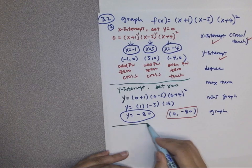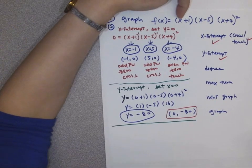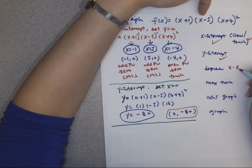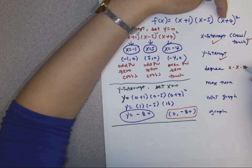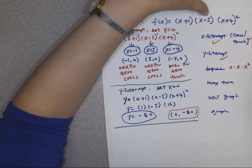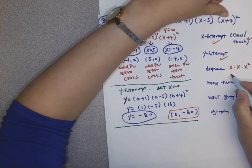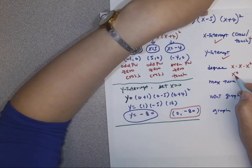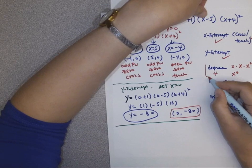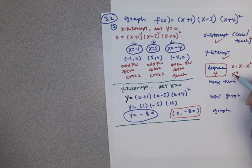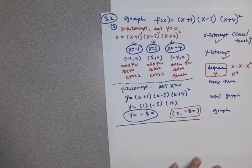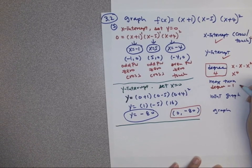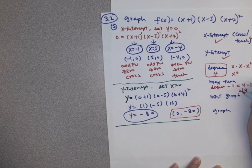What degree is it? There's an x to the first from the first factor, x to the first from the second factor, and x to the second from the third factor — all positive, totaling x to the fourth. So the leading term is x⁴, degree four, with a positive leading coefficient. Maximum turns = 4 − 1 = 3.